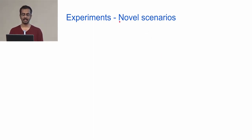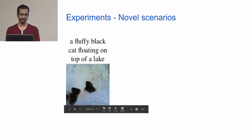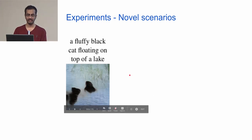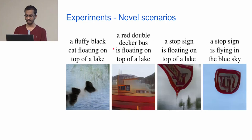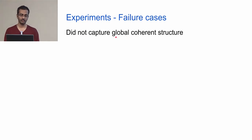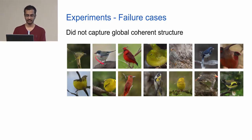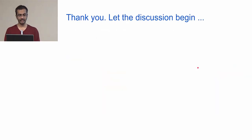Novel scenario captions — descriptions unlikely to occur in the real world, like 'a fluffy black cat floating on top of a lake' — show the model getting textures and colors approximately right but lacking fine detail. One significant failure mode is the model's inability to capture globally coherent structure: generated birds may have two heads, two beaks, no head, or other anatomically incorrect features, indicating room for improvement in maintaining global consistency.